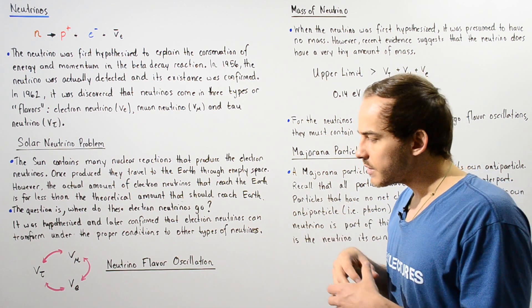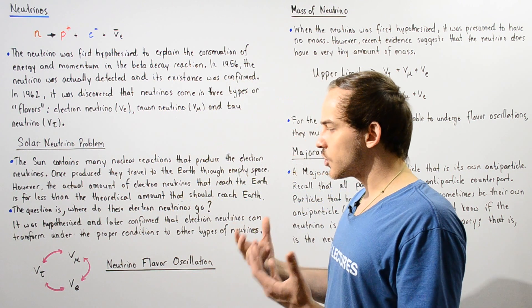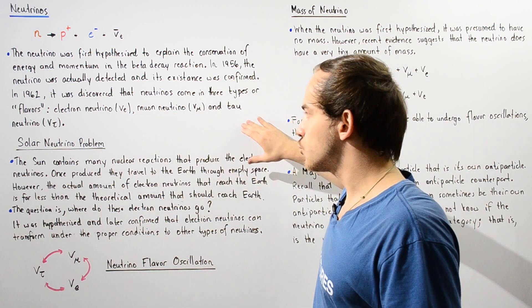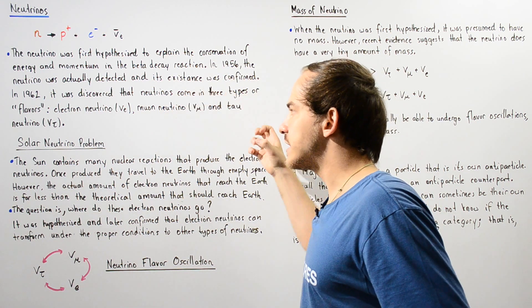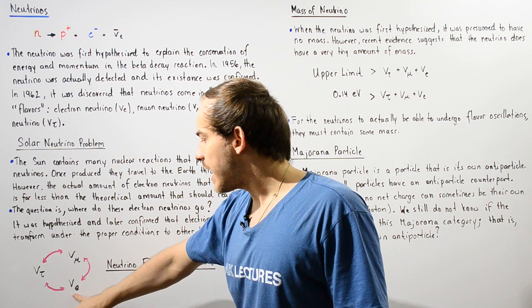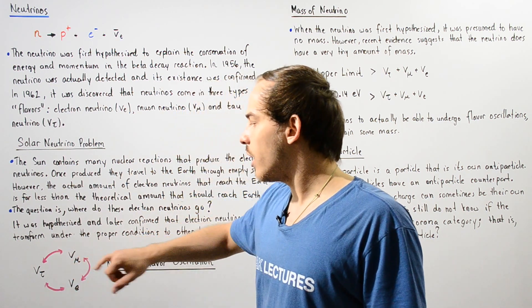So basically, this is the idea that under certain proper conditions, under certain circumstances, any given one of these neutrinos can basically transform into a different flavor. So we see that our electron neutrino can transform into the tau or the muon neutrino.